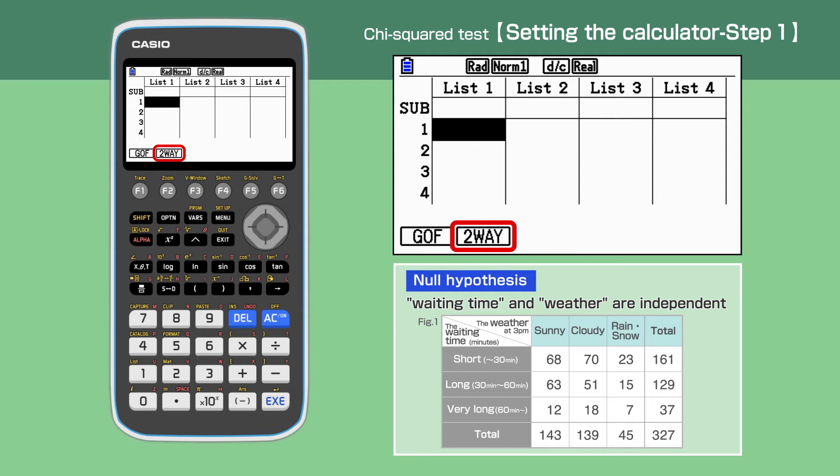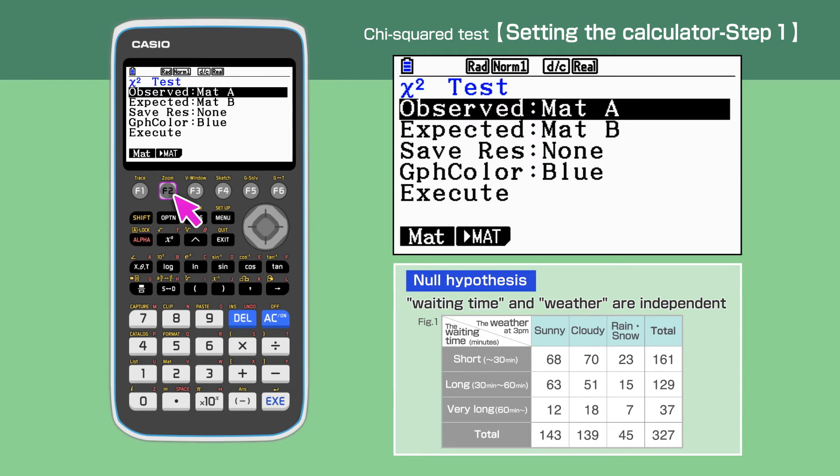Press F2 to choose two-way. The Chi-Squared test screen is shown. Make sure Observed is highlighted, then select F2.